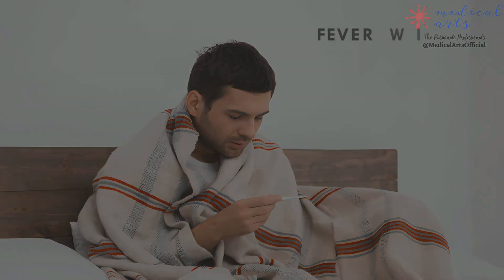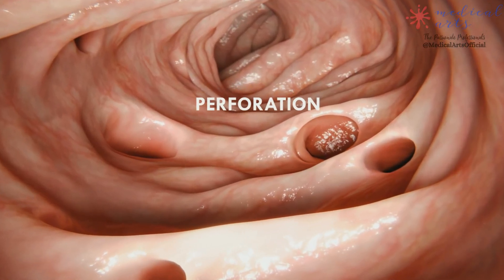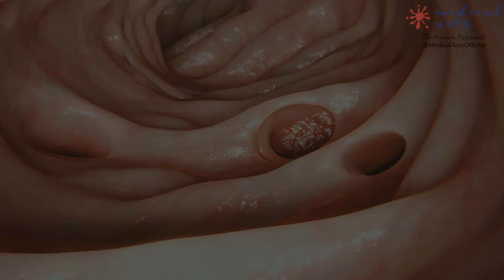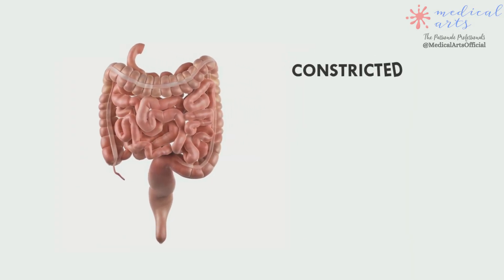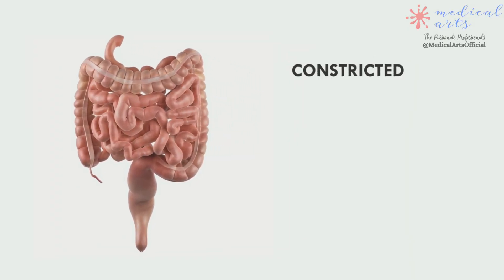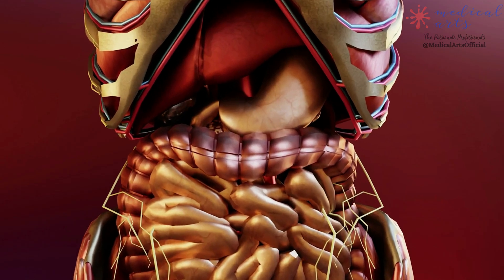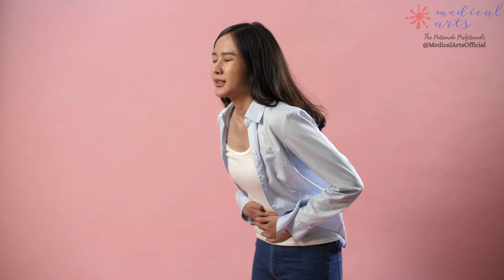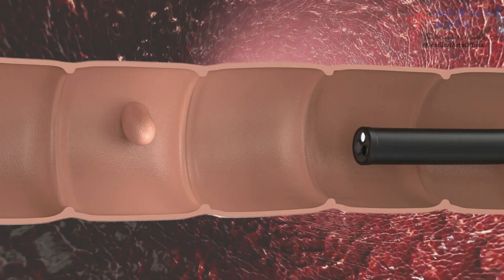Diverticulitis happens due to micro perforation of small pouches called diverticula. Diverticula gets constricted and swollen as a result of this inflammation, which produces pain. Pus can accumulate resulting in an abscess, which may cause a severe illness.